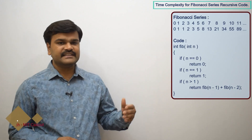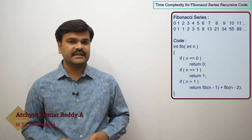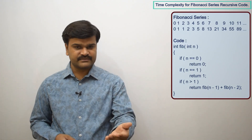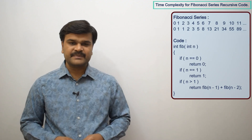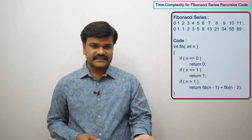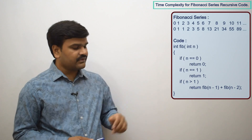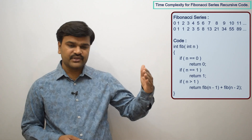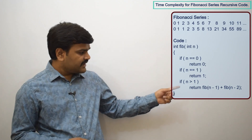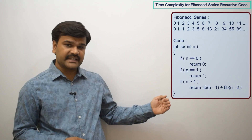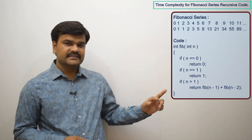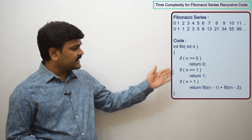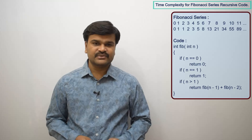Whenever n is 0, we are returning 0 — the 0th Fibonacci number. If n equals 1, then we are returning 1, the first Fibonacci number. If n is greater than 1, we find the value recursively. To find the nth Fibonacci number, we need the (n-1)th and (n-2)th Fibonacci numbers, and their sum becomes the nth Fibonacci number.